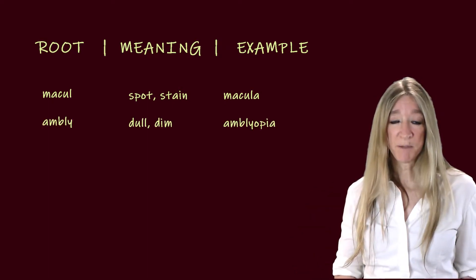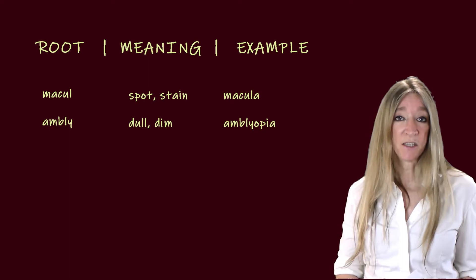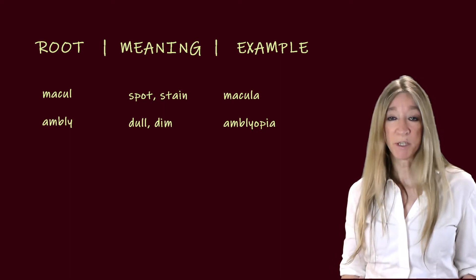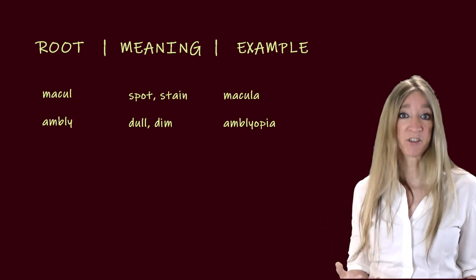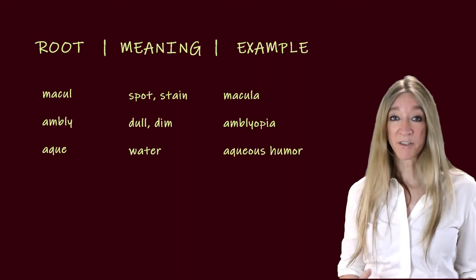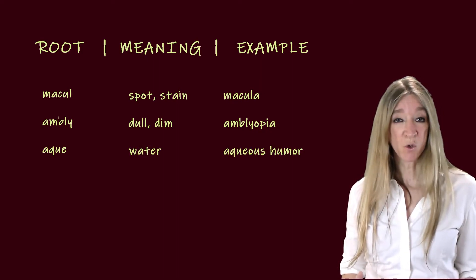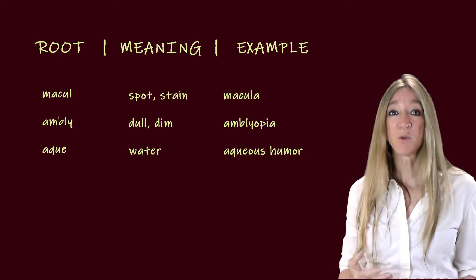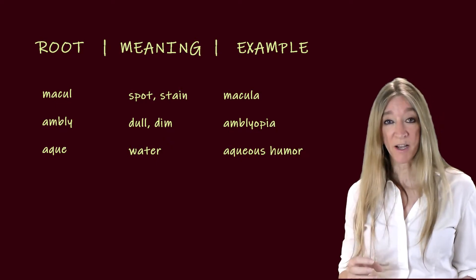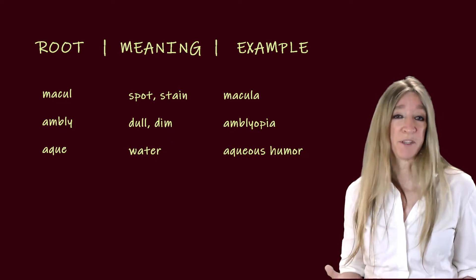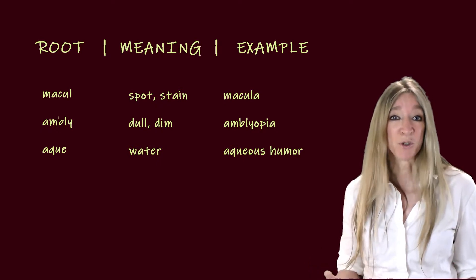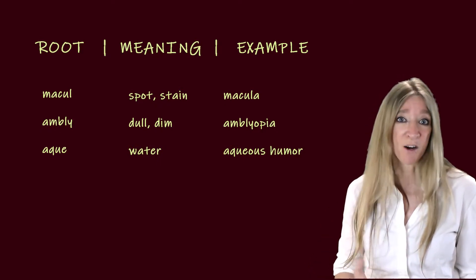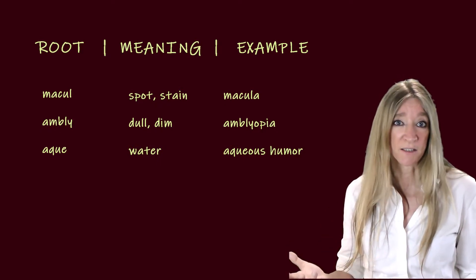The next root, ambly, meaning dull or dim. Amblyopia is dullness of vision. The next root, aque or aqua, meaning water. The aqueous humor is a part of the eye. And of course we know that root from so many words in everyday life — aqua, aquatic, aquarium.